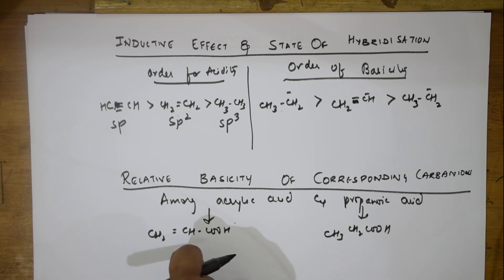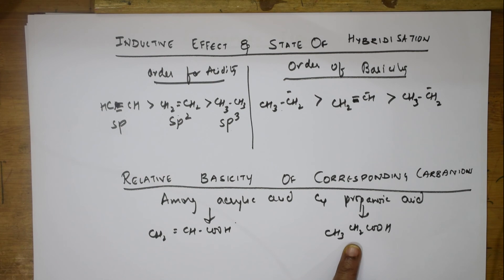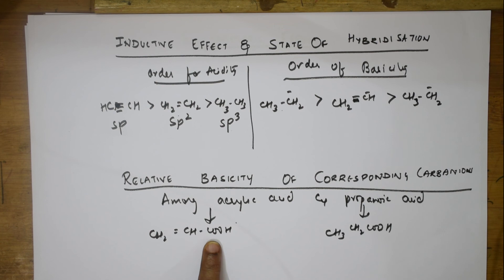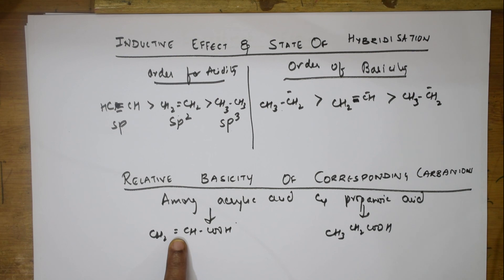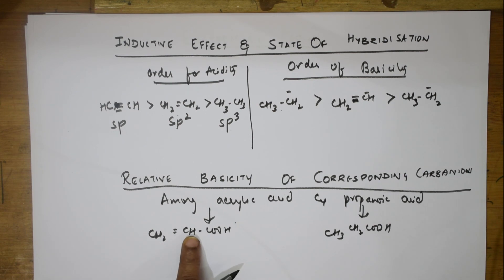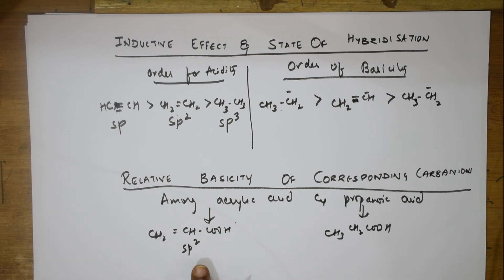The acidity of acrylic acid is higher than that of propionic acid because of the electron-withdrawing inductive effect of the sp2-hybridized carbon in the C=C double bond. In propionic acid, the corresponding carbon is sp3 hybridized. However, the alpha-beta unsaturated system in acrylic acid also shows a resonance effect that tends to decrease acidic strength.